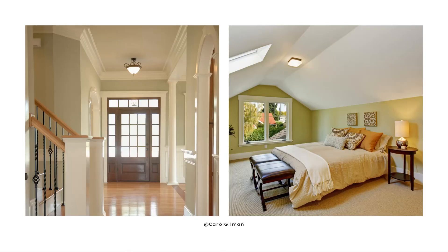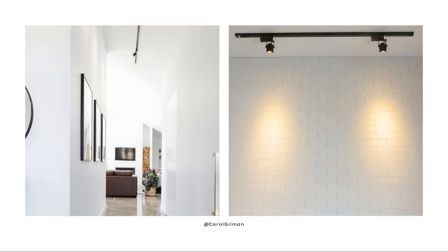Another example of overall lighting would be a surface-mounted light placed right against the ceiling, or even a pendant light hanging down from your ceiling — both provide general ambient lighting. Think of walking into an entryway or bedroom with a surface-mounted or pendant light in the center of the room; that's a good example of ambient lighting. Track lighting, whether shining onto a wall or out into the room, also helps provide overall lighting.